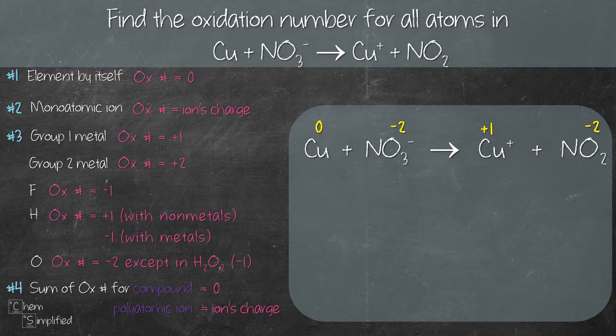Since we know that the oxidation number of oxygen is negative two, we can find the oxidation number for nitrogen this way. We'll call nitrogen's oxidation number X since we don't know it yet. So X plus two times negative two equals zero.